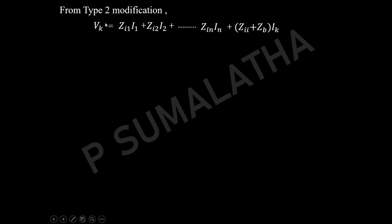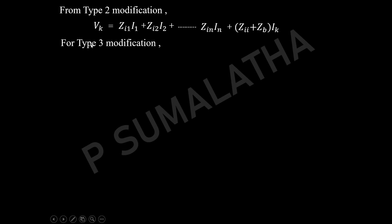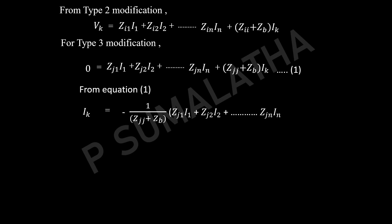What is the equation with respect to the newly added branch? We are not going to bring any new branch K here. For the type 2 modification, since we brought a new bus K, we got a voltage with respect to the K bus. But in the type 3 modification, there is no new node. Since there is no new node, V suffix A becomes 0. The same equation can be written, but the voltage with respect to the new node A becomes 0 because we have connected an element between the existing old buses. From this, we can get the IK value: IK equals minus 1 divided by ZJJ plus ZB, into the corresponding term.